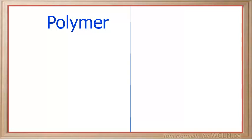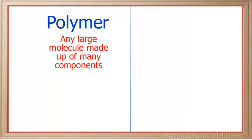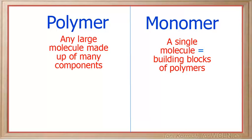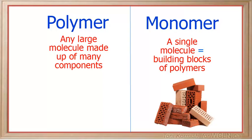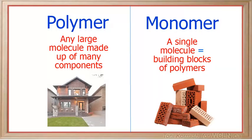This is a good time to clarify some terminology for you. If you see the term polymer, this refers to any large molecule that is made up of many components. The term monomer, on the other hand, refers to a single molecule. The monomers are the building blocks of polymers, just like bricks are the building blocks of a brick house.